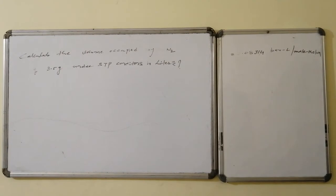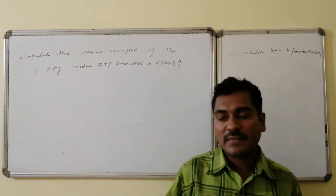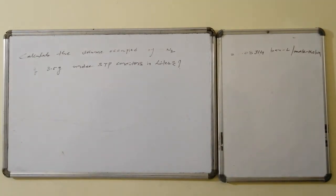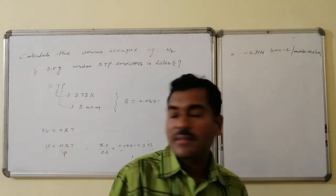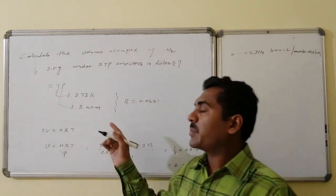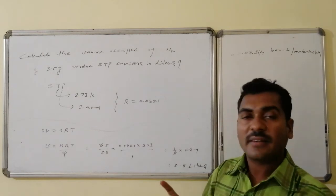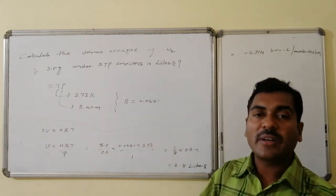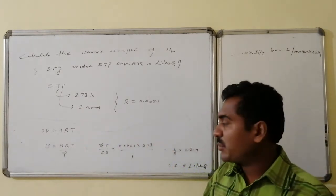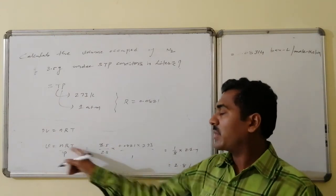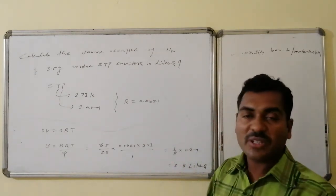Question: Calculate the volume occupied by 3.5 grams of nitrogen gas under STP conditions. STP means standard temperature (273 K) and pressure (1 atmosphere). Using R = 0.0821 L·atm/mol·K, and PV = nRT: V = nRT/P = (weight/gram molecular weight) × R × T / P = (3.5/28) × 0.0821 × 273 / 1 = 2.8 liters.